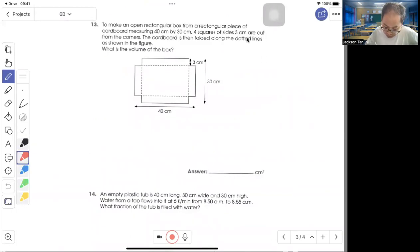Question 13: To make an open rectangular box from a piece of cardboard measuring 14 by 34 cm. Squares are folded along to find the volume of the box. When you fold it, it looks like this. This side is 14 minus 3 minus 3, that gives you 34 cm.